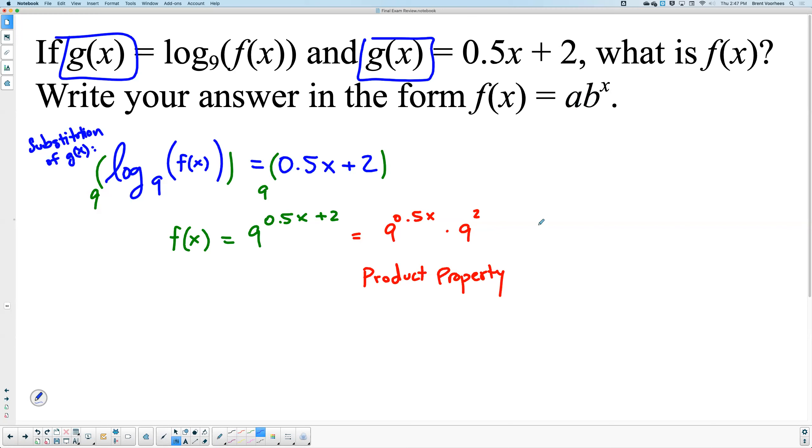Now 9 squared is going to become my a. So this time I'm going to put this in the front. That's a constant. What is 9 squared? 81. That's my a.